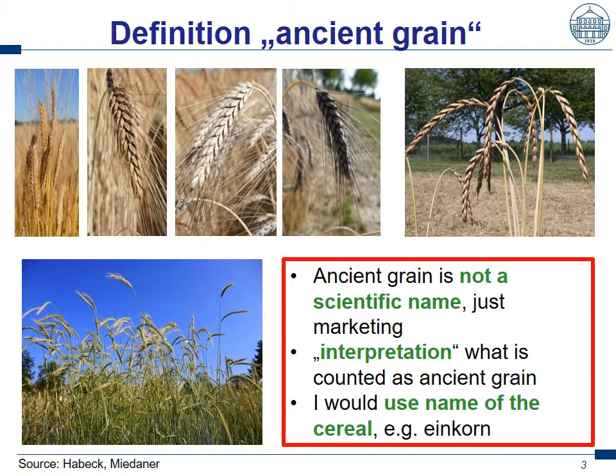Important to know is that ancient grain is not a scientific name — it's just a marketing name. And depending on the marketing of a company, there is more or less defined inside ancient grains. I personally, as a scientist, am not happy with this definition. I would use the name of the cereal. For instance, when I have an einkorn bread, why not tell the story: this is einkorn, the oldest wheat ancestor of the very well-known bread wheat.